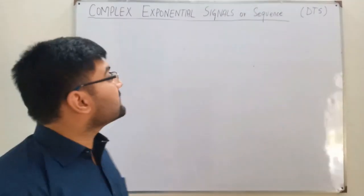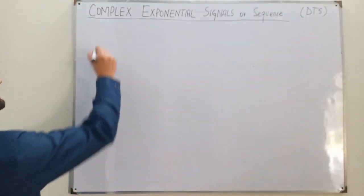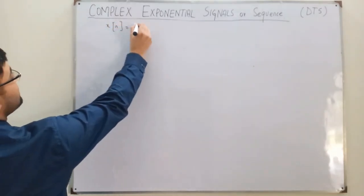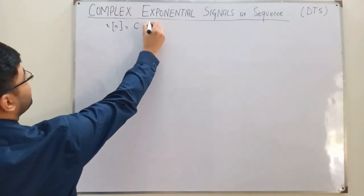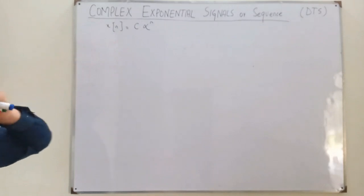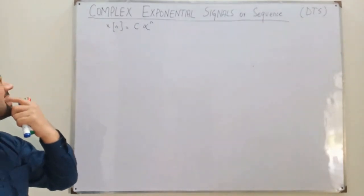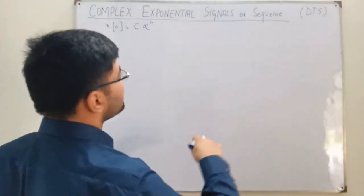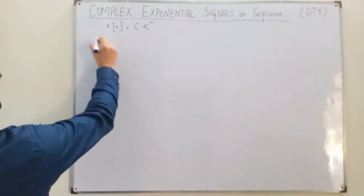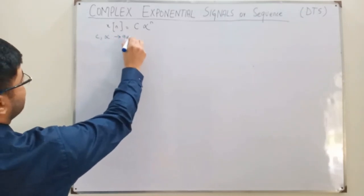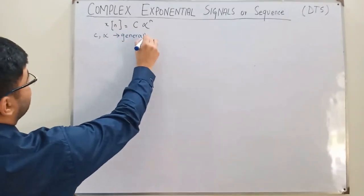Generally this signal is represented as x of n, equal to C times alpha to the power n. This is the general representation where C and alpha are normally complex numbers.